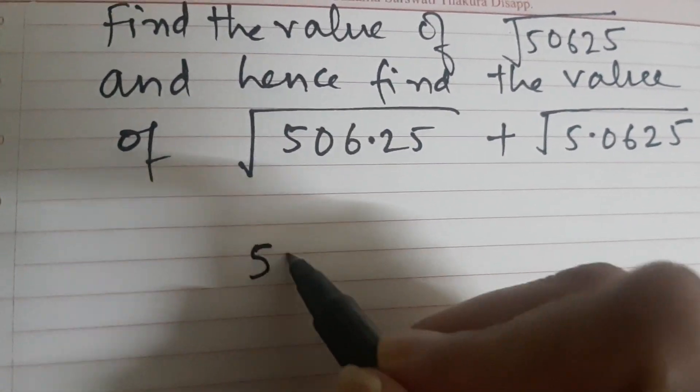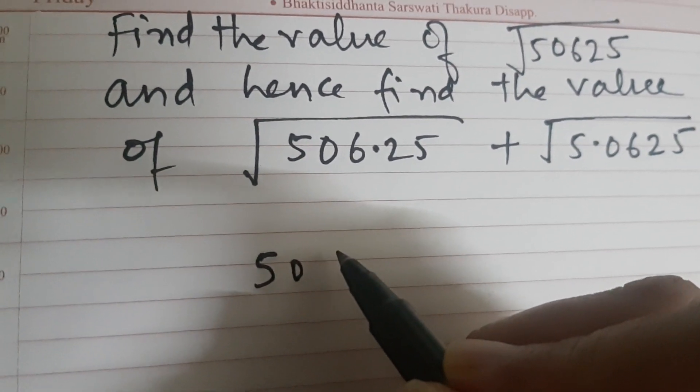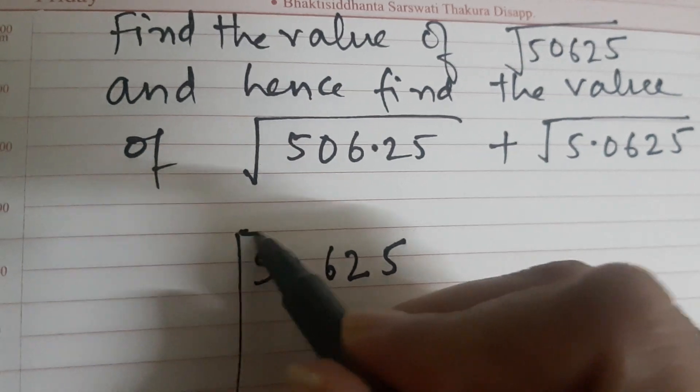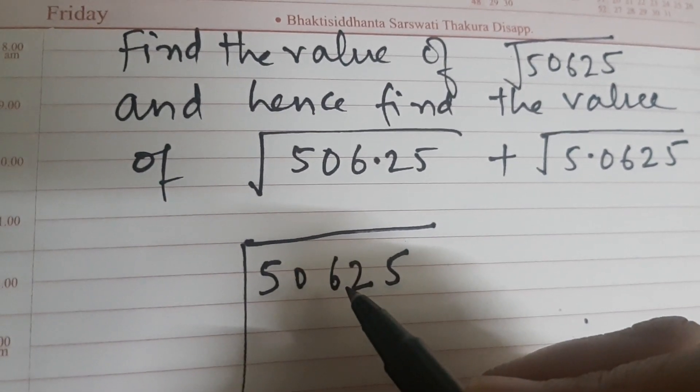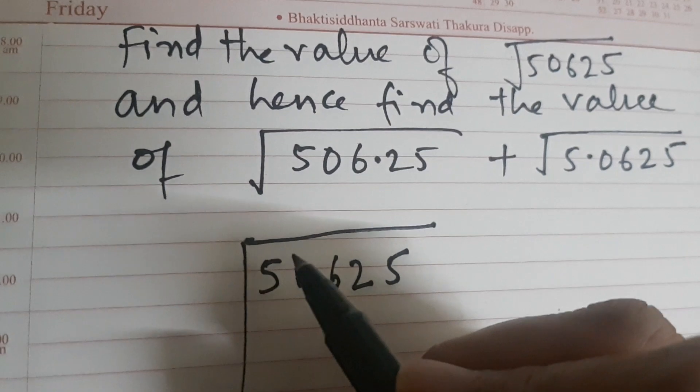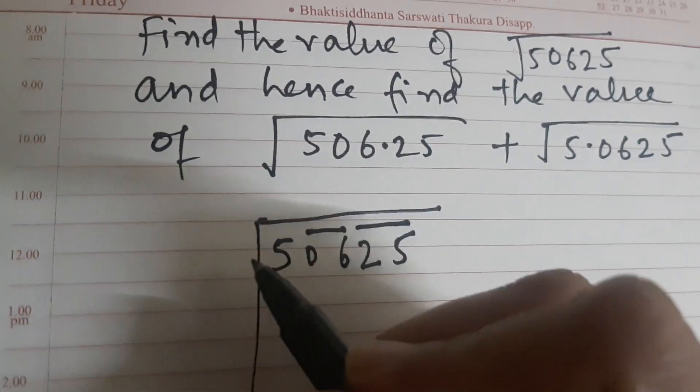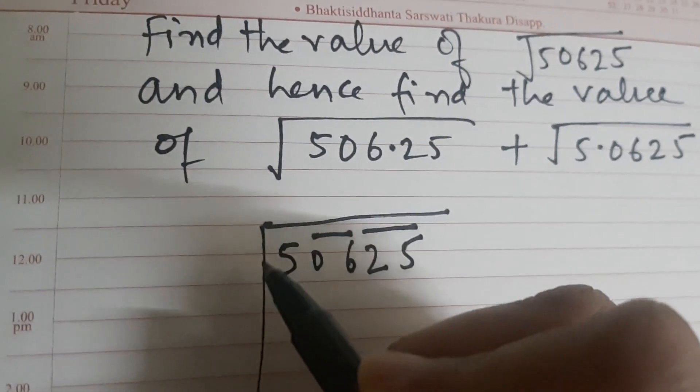So let us solve this. We have to first find the square root of 506.25, so we will be marking the periods from right to left.